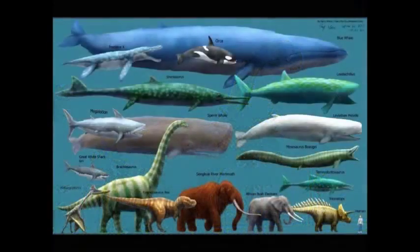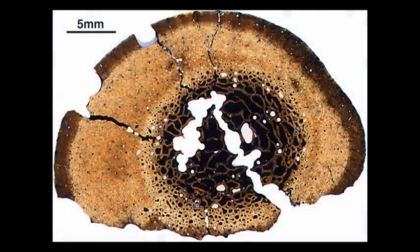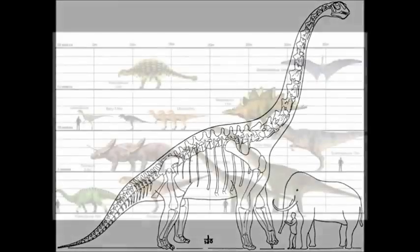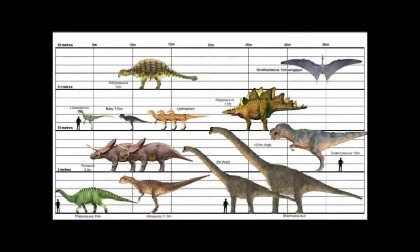Even if oxygen levels were much higher back then — which is often an excuse as to why animals were so large — it doesn't explain the large plant life. From fossils, paleontologists can prove that the bone densities of the dinosaurs were no more dense than that of human beings. Yet many dinosaurs were so big that if today's gravity were the same back then, they wouldn't be able to walk, let alone hunt, without breaking bones.